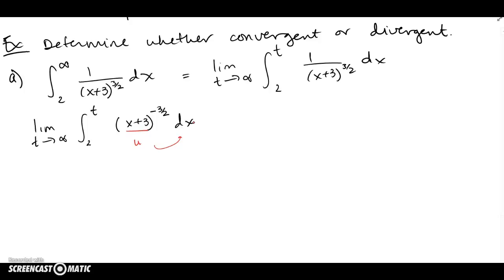So I can just go ahead and apply, add 1 to the exponent and divide by it. So don't forget the limit part as well. (x+3)^(-1/2) over -1/2 from the original limits 2 to t. I didn't really do a u sub, so I don't need to change the limits.